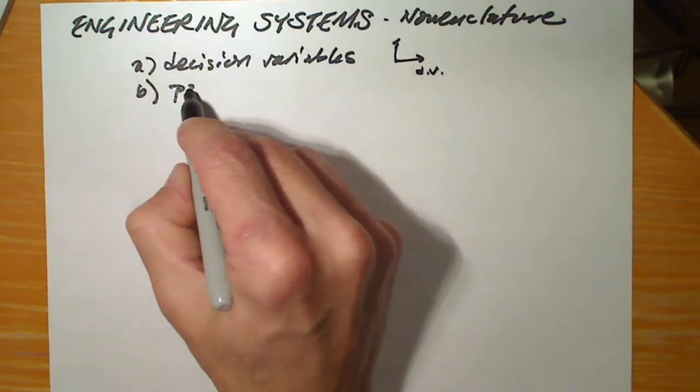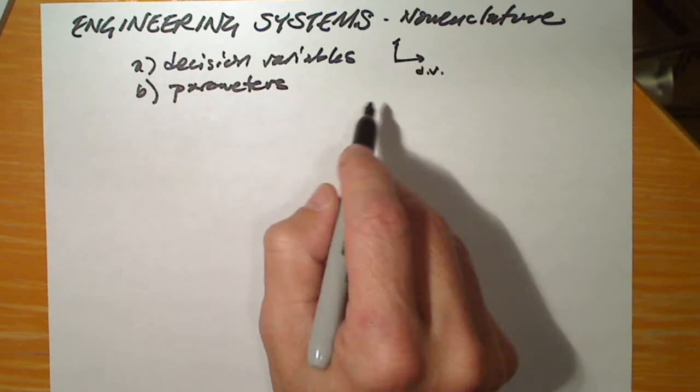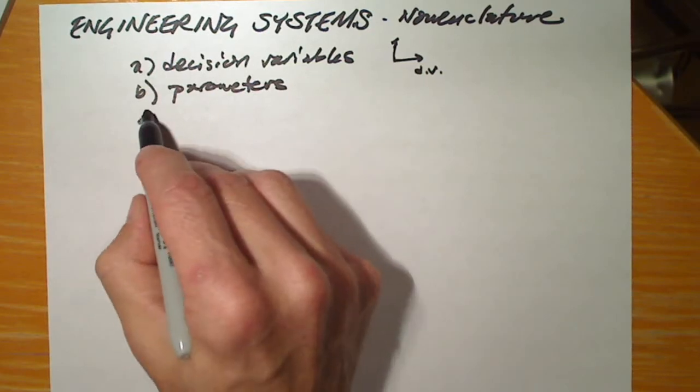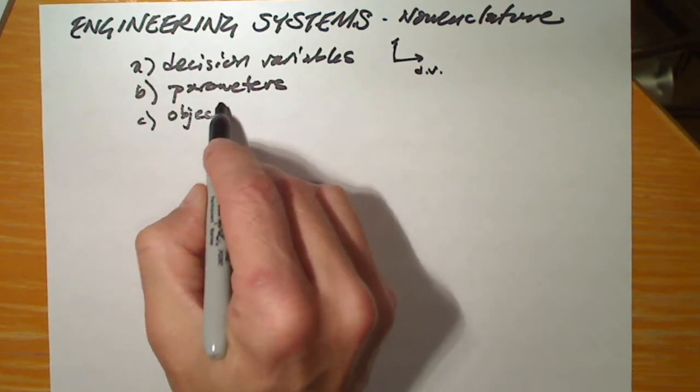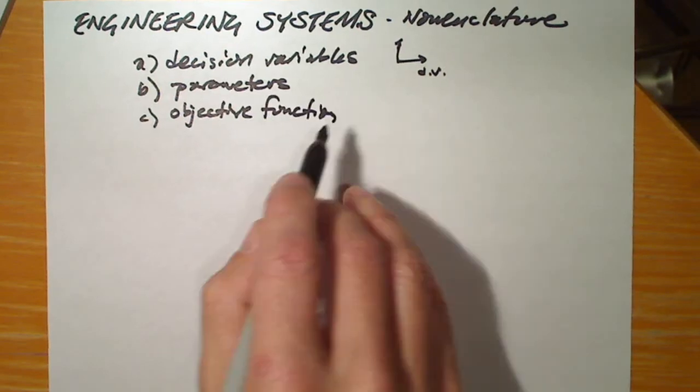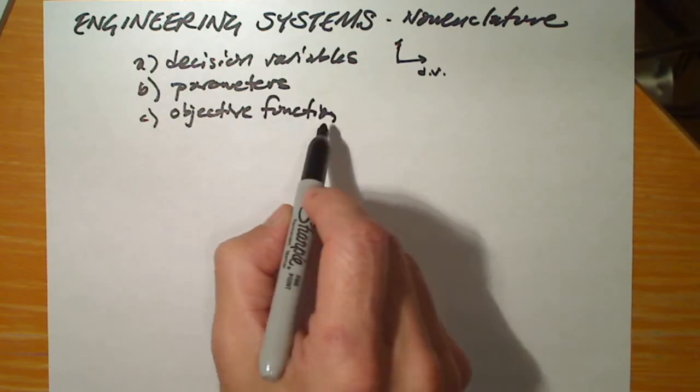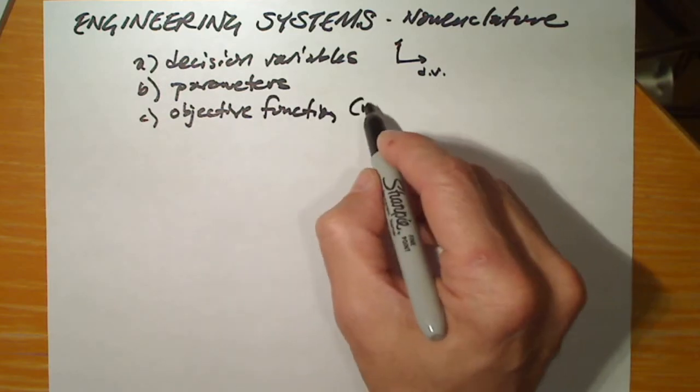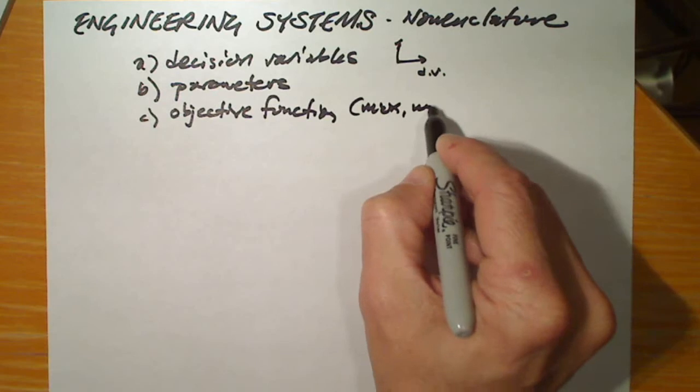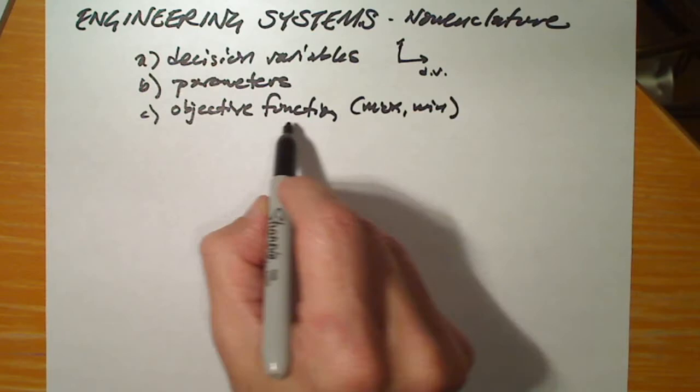The problem also asks for parameters, and I haven't recorded a video that talks about the parameters yet. There is the objective function by which the merit of one design or the value of one design will be compared to all others.